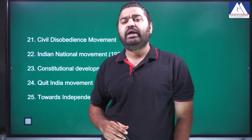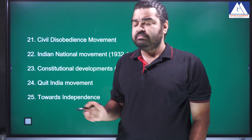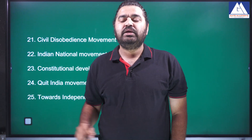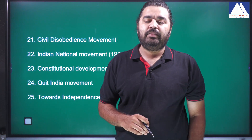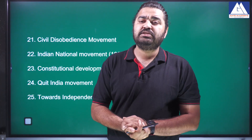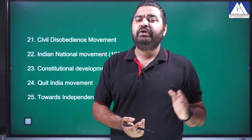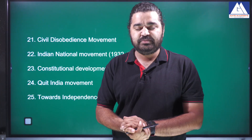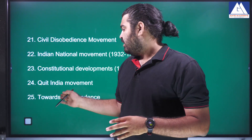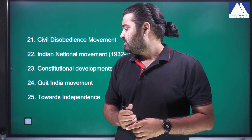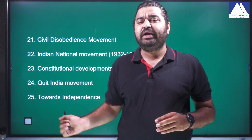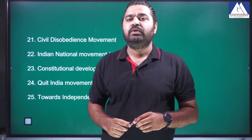Constitutional developments from 1921 to 1935 cover notable events. Last is the Quit India movement — what it was about, who participated, and its outcome and result. The final chapter covers towards independence, from 1944 to 1947.